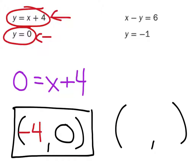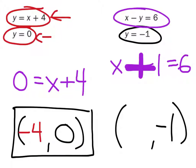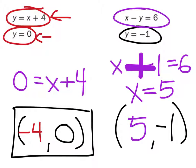Let's set up our answer on this next one. The y-value is negative 1 — it told us that right here. So I'm going to take this second equation and replace y with negative 1. We've got x minus negative 1 equals 6. Minus a negative becomes a plus, so something plus one is six. What plus one is six? Five. X equals 5.